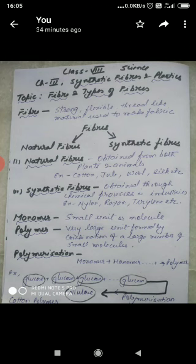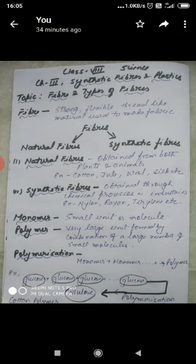What is fiber? A fiber is a strong and flexible thread-like material used to make fabric. The clothes are made up of fabric, so we need fiber to make fabrics. Fibers are also used to make several materials like ropes, nets, etc. So fiber is very important.